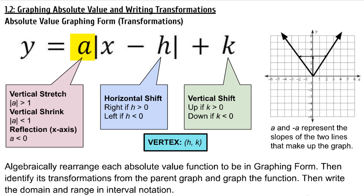A represents several things. If the absolute value of A is greater than 1, you have a vertical stretch. If the absolute value of A is less than 1, you have a vertical shrink. If A is less than 0, then you have a reflection about the x-axis.